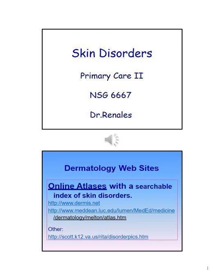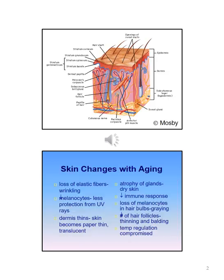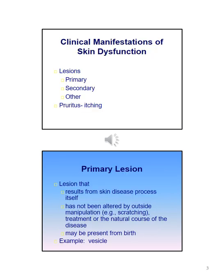In this lecture we will be discussing skin disorders. As we age, our skin also changes. A few changes that occur include loss of elastic fibers which can cause wrinkling, melanocytes decrease so there's less protection from UV rays, the dermis thins causing the skin to become paper thin and sometimes translucent, atrophy of the glands causes the skin to be more dry, and there is a decreased immune response.